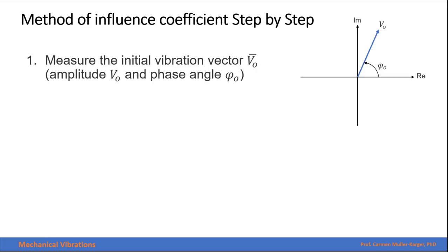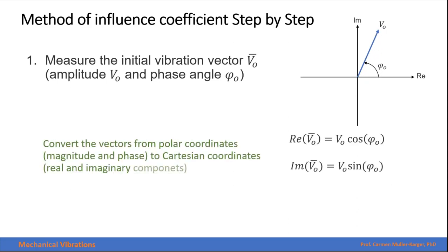Let's then go over the method of the influence coefficient step by step. The first step is to measure the initial vibration vector. That's due to the unknown unbalance of the machine. We will measure the amplitude and the phase angle. It can be represented graphically as a vector with magnitude and direction. And we will convert the vector from polar coordinates, that is magnitude and phase, to Cartesian coordinates, which is real and imaginary components or horizontal and vertical components.